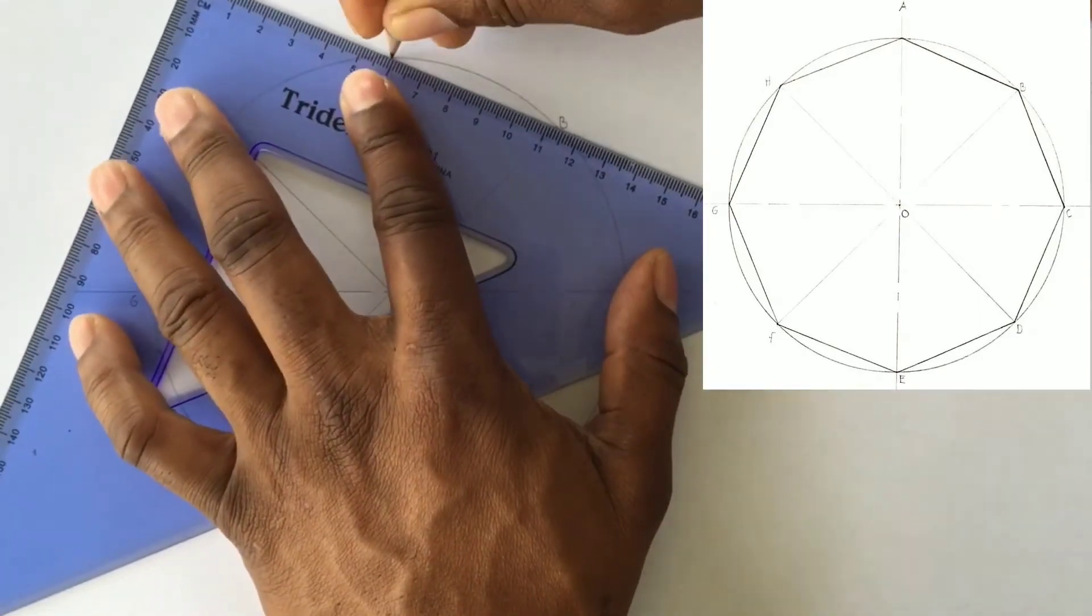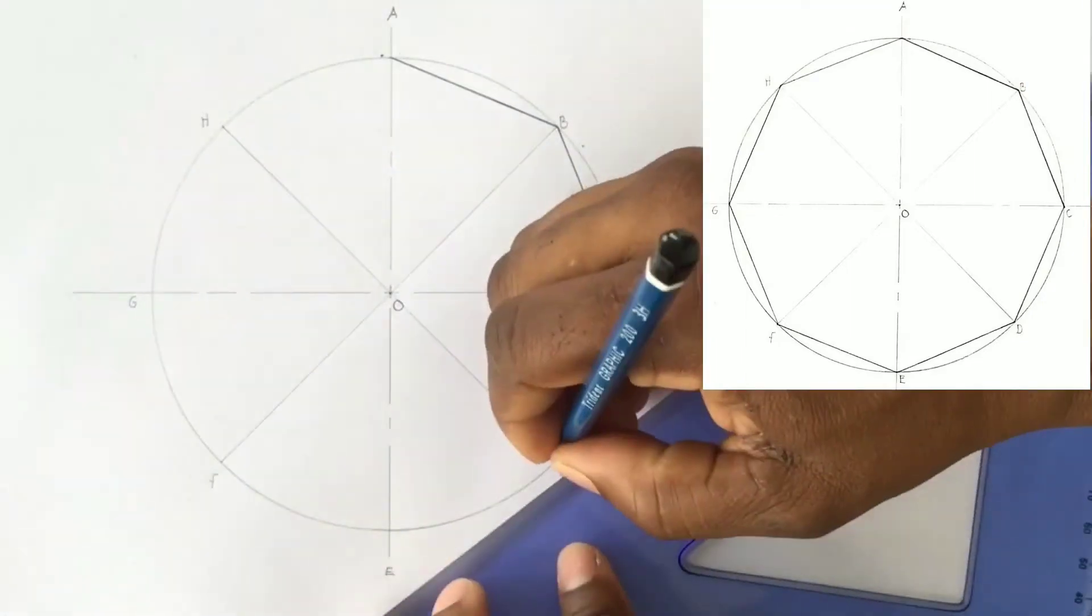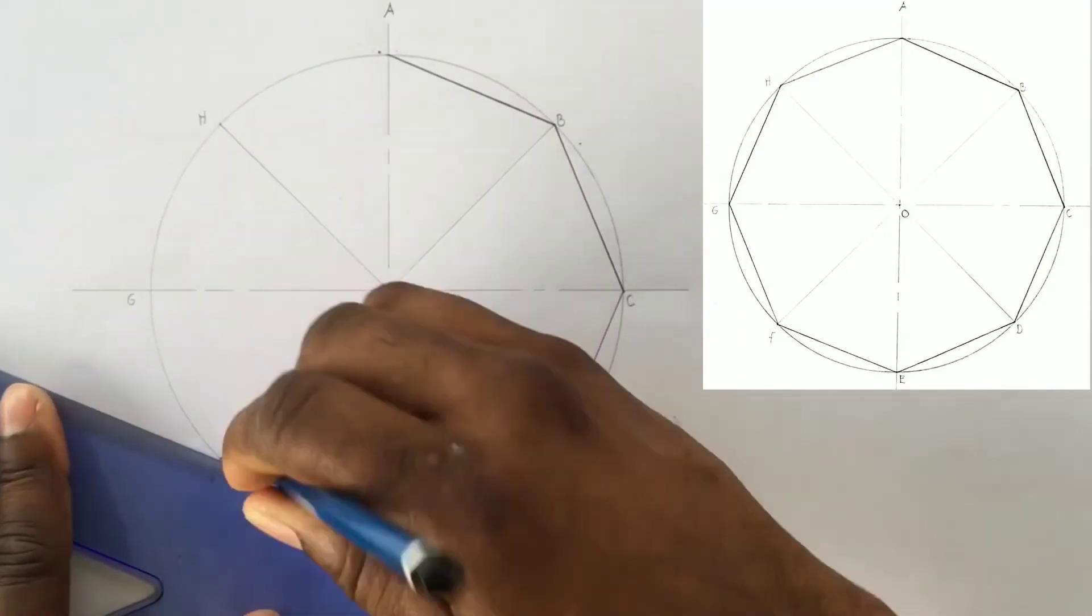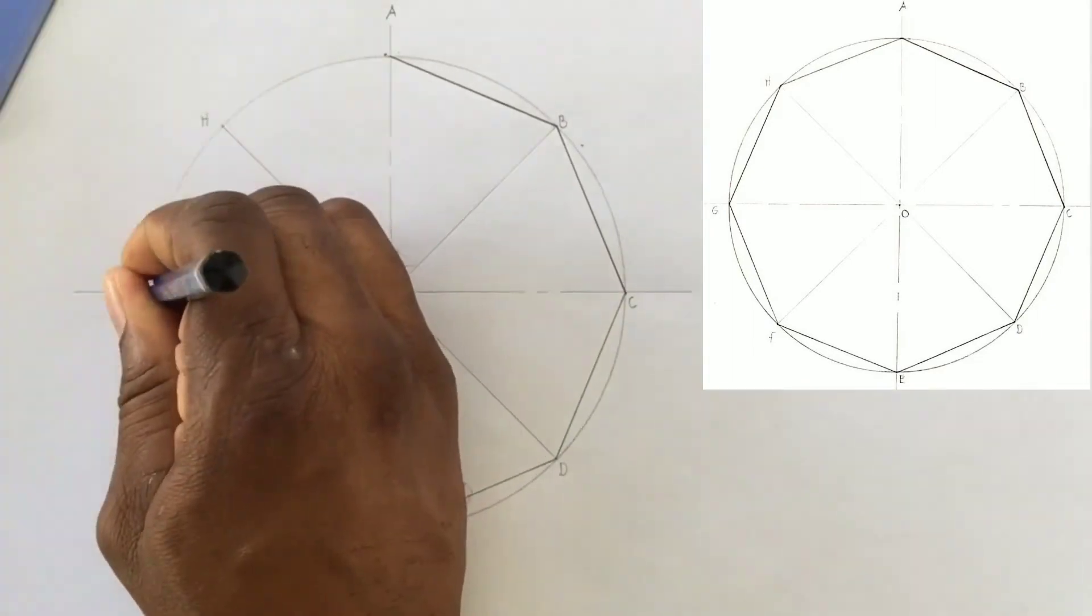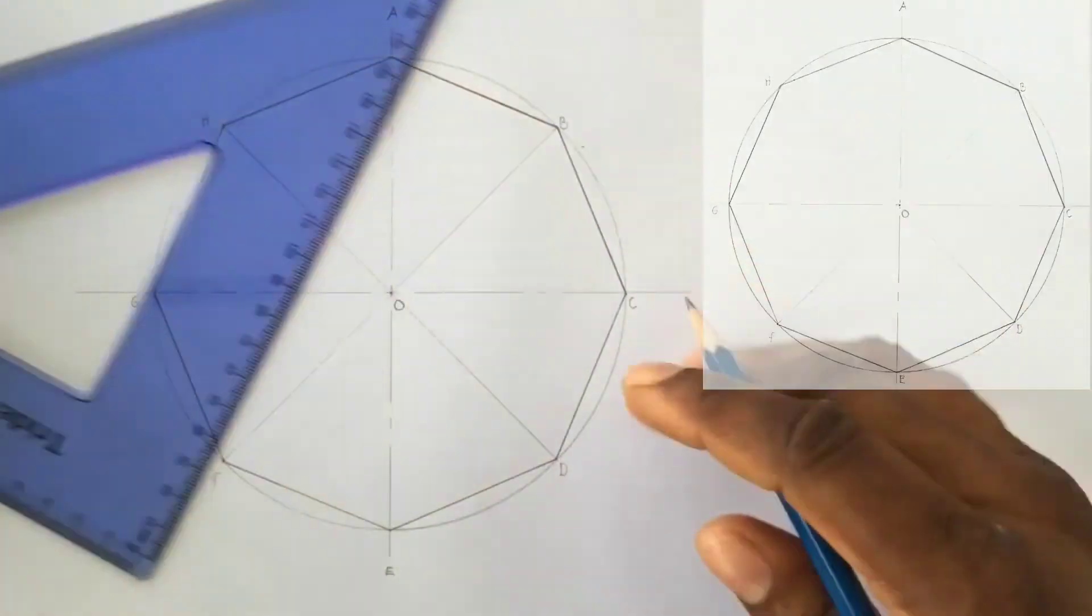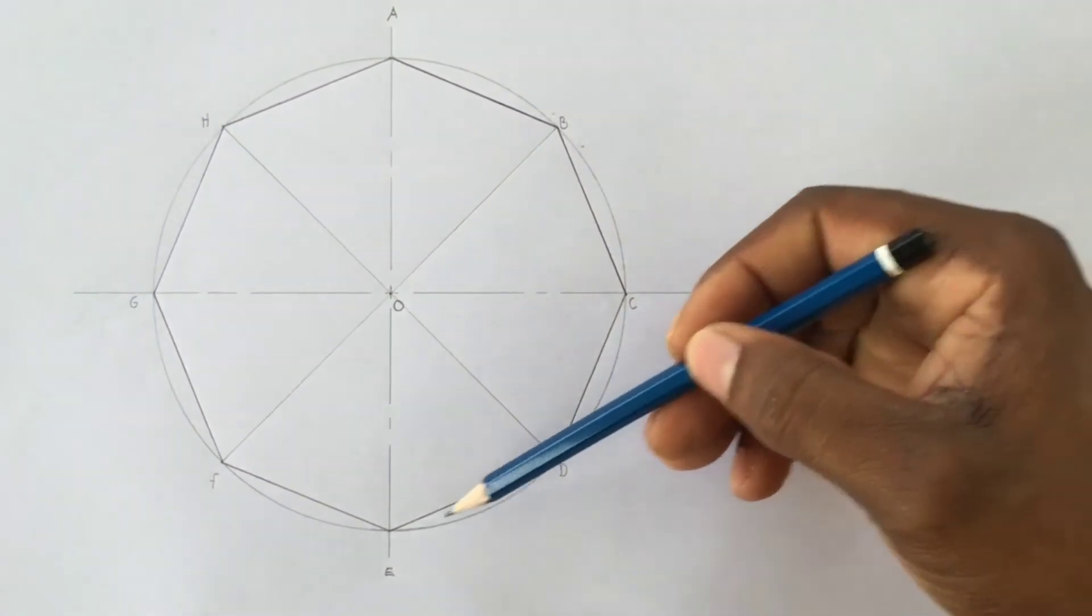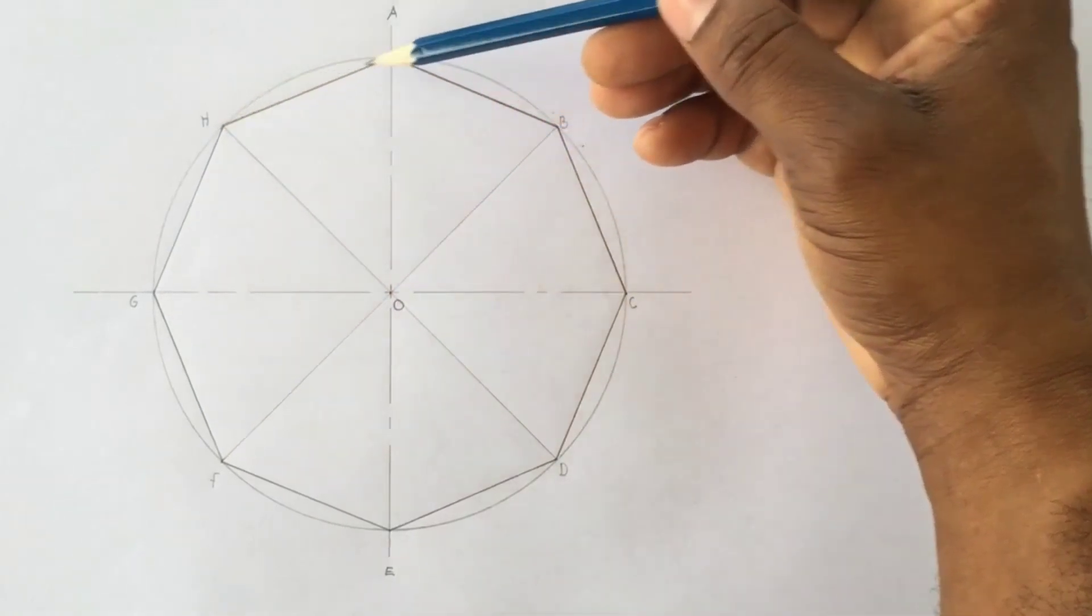We will now outline A to B, B to C, C to D, D to E, E to F, F to G, G to H, and A to H. We have just outlined a regular octagon inside a circle consisting of eight equal sides.